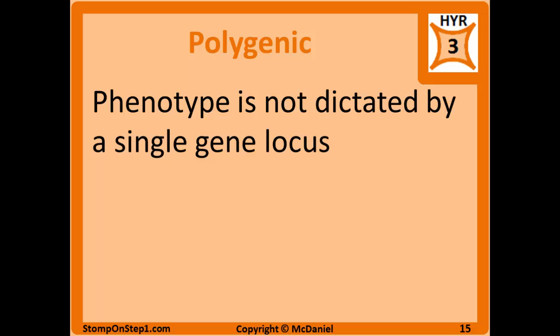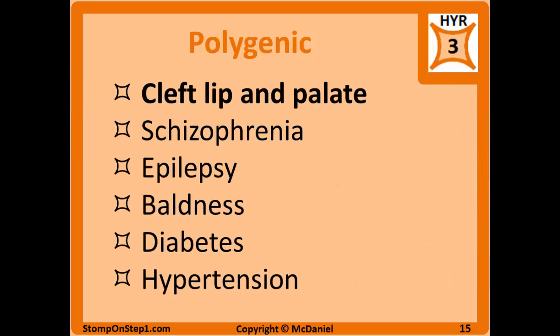Polygenic is when the phenotype is not dictated by a single gene — more than one gene determines the overall phenotype, or there's some interaction between genes and the environment. This is the case with most diseases and overall types of inheritance. They specifically like to ask questions about cleft lip and palate being polygenic. Other polygenic conditions include schizophrenia, epilepsy, baldness, diabetes, and hypertension — most diseases you think about fall into this category.